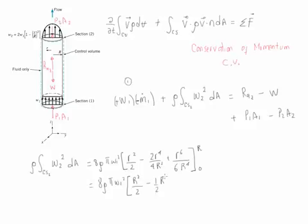And this is r squared divided by 2 minus 1 half r squared plus 1 sixth r squared.